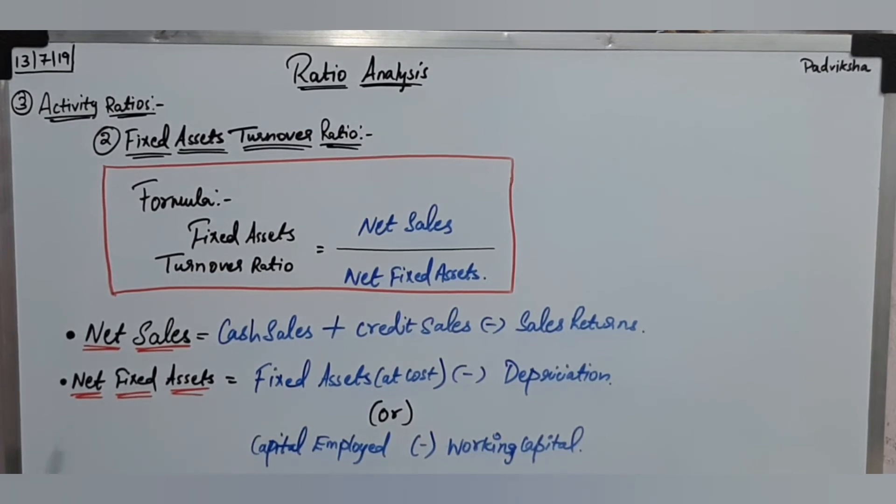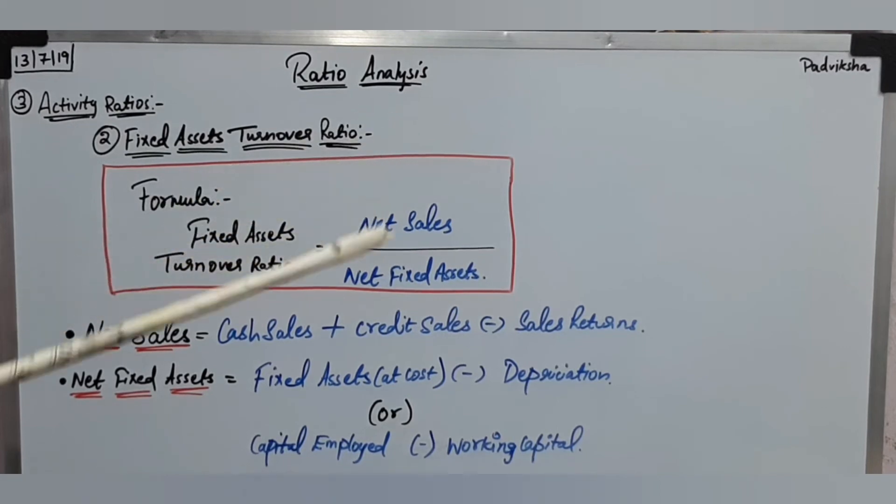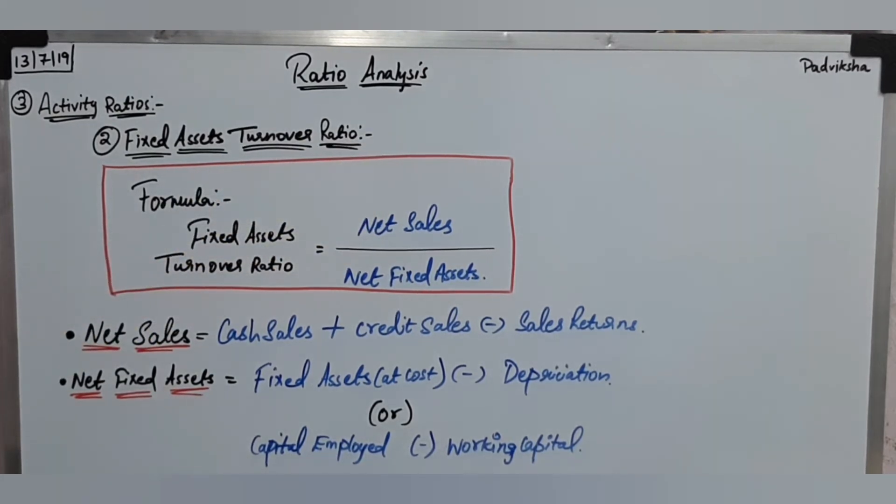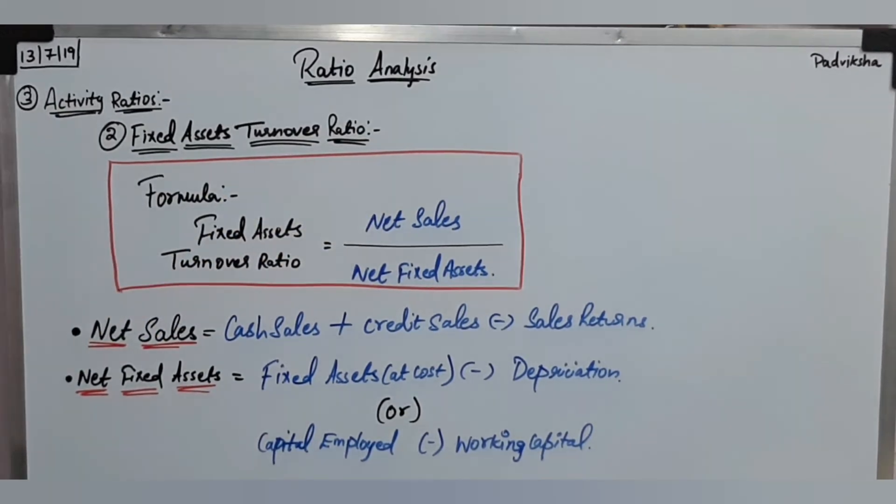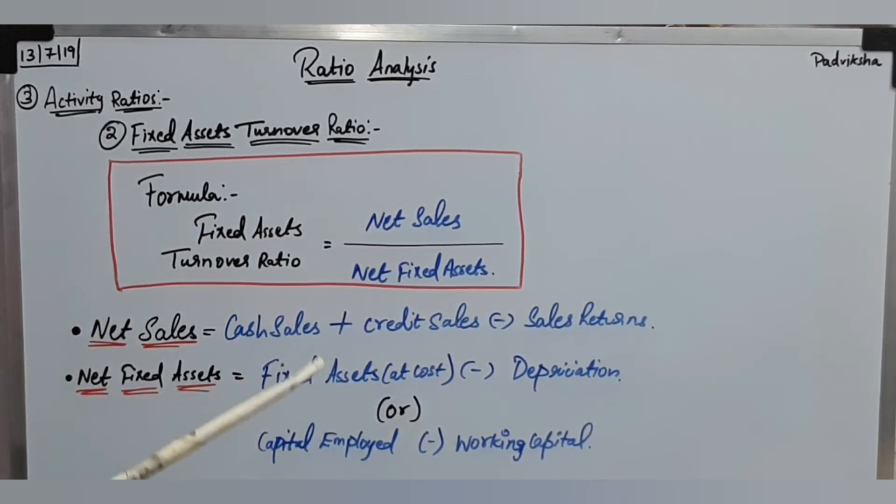Now we have the formula. Fixed assets turnover ratio is equal to net sales divided by net fixed assets. What did we see in the last video? We saw that cash sales plus credit sales minus sales returns equals net sales. Next is net fixed assets.